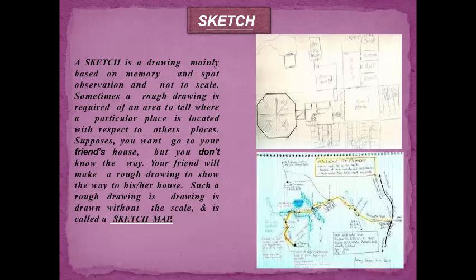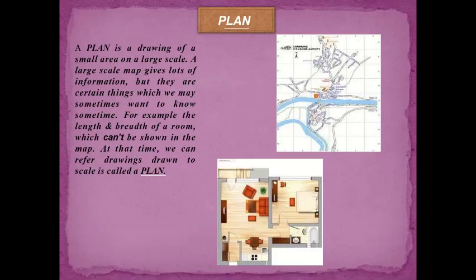In short, a sketch is a rough drawing of a particular place or area. It is not drawn to scale — it just gives us a general idea about the place, such as its location and landmarks. A plan, on the other hand, is a drawing of a small area on a large scale. A large scale map gives lots of information, but for specific details like the length and width of a room which can't be shown on a map, we refer to drawings drawn to scale, which are called plans.